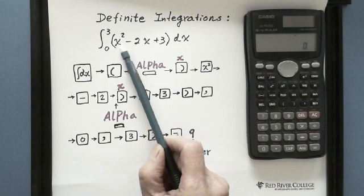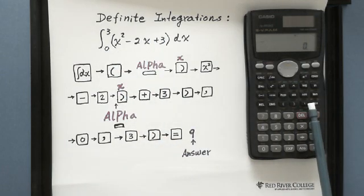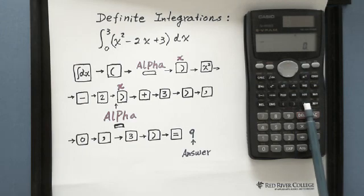After we enter this function, we use a comma. This button, comma, 0, 3. Okay, let me show you.